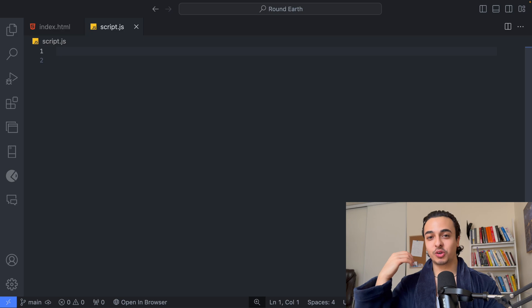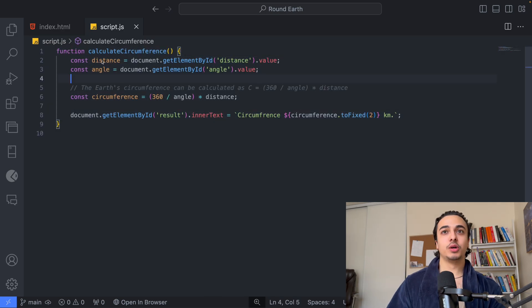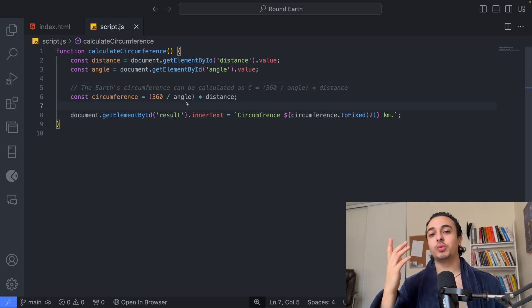And all we need to do to correctly utilize this calculation is do this. Here we're getting the value of the distance from the input, as well as the angle. And since we're assuming that the Earth is round, we're going to take the 360 degrees,